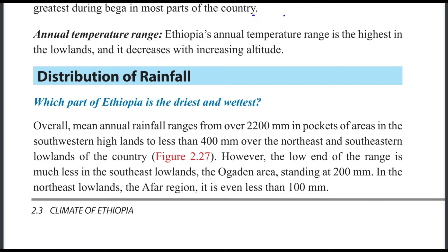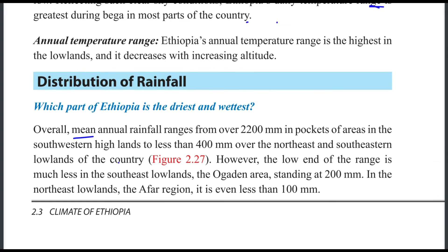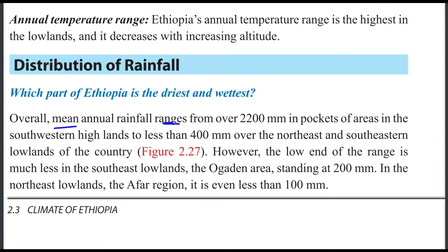Distribution of rainfall in Ethiopia. Overall, mean annual rainfall ranges from over 2200 mm in pockets of areas in the southwestern highlands to less than 400 mm over the northeast and the southeastern lowlands of the country.